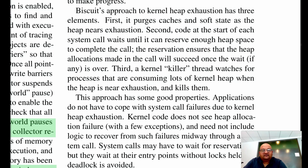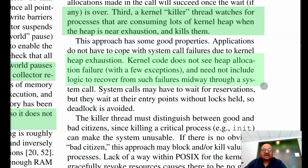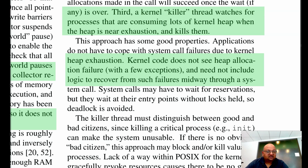Biscuit takes a very different approach where at the start of each system call, it waits until it has enough heap space to successfully complete the call. In addition to that, it uses a killer thread which goes and kills processes that are using too much memory. The benefit is that you get to omit a lot of very complicated kernel code that deals with unwinding a failed partially-executed system call. Also, applications do not see system call failures — they might have to wait just a little bit if you are close to heap exhaustion, but they will not see a failure.